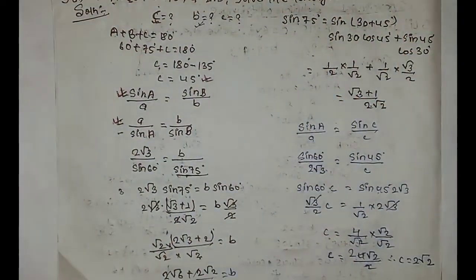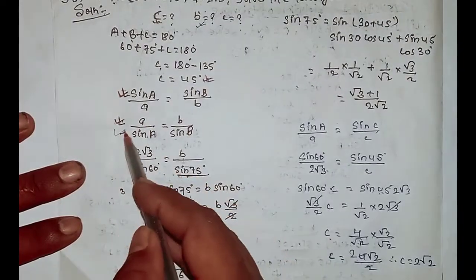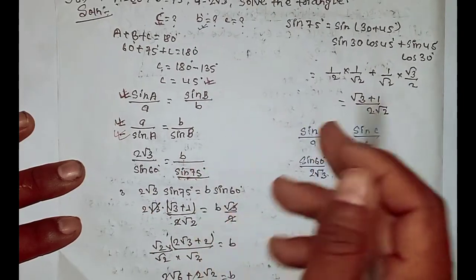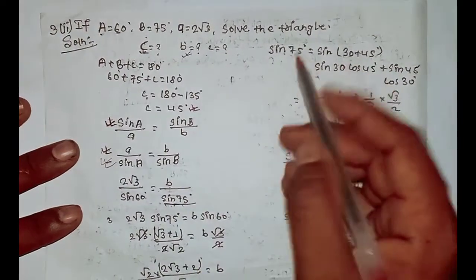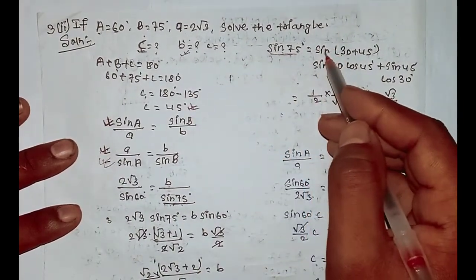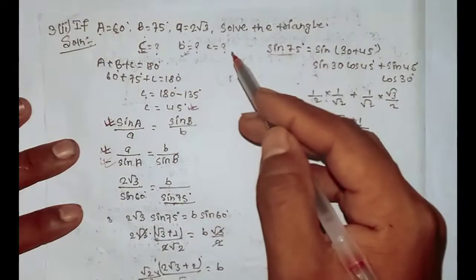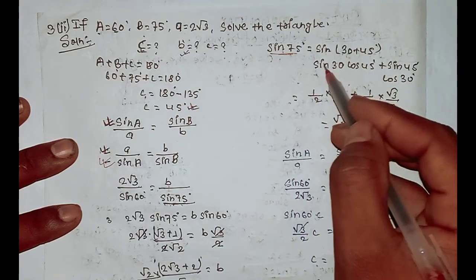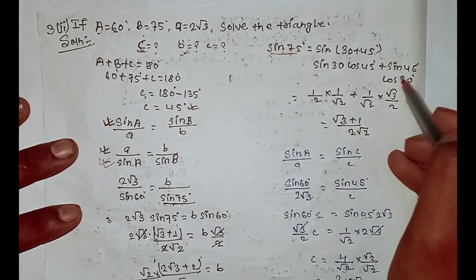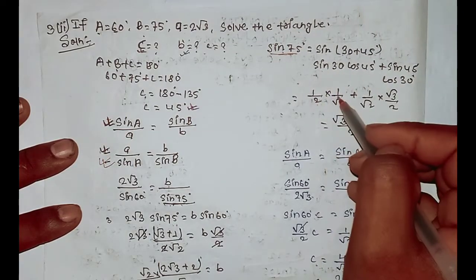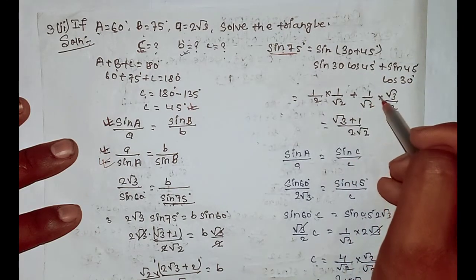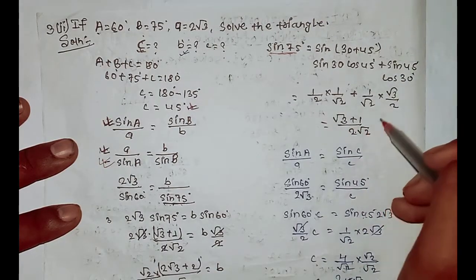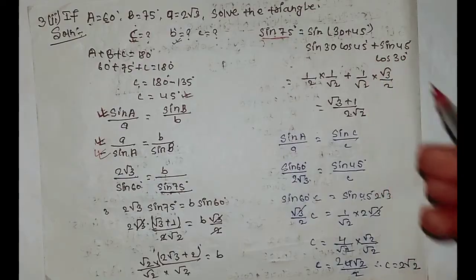We use the compound angle formula: sin 75 degrees equals sin(30 + 45) equals sin 30 cos 45 plus sin 45 cos 30. Sin 30 is 1 by 2, cos 45 is 1 over root 2, sin 45 is 1 over root 2, and cos 30 is root over 3 by 2. This gives root over 3 plus 1 divided by 2 root over 2.